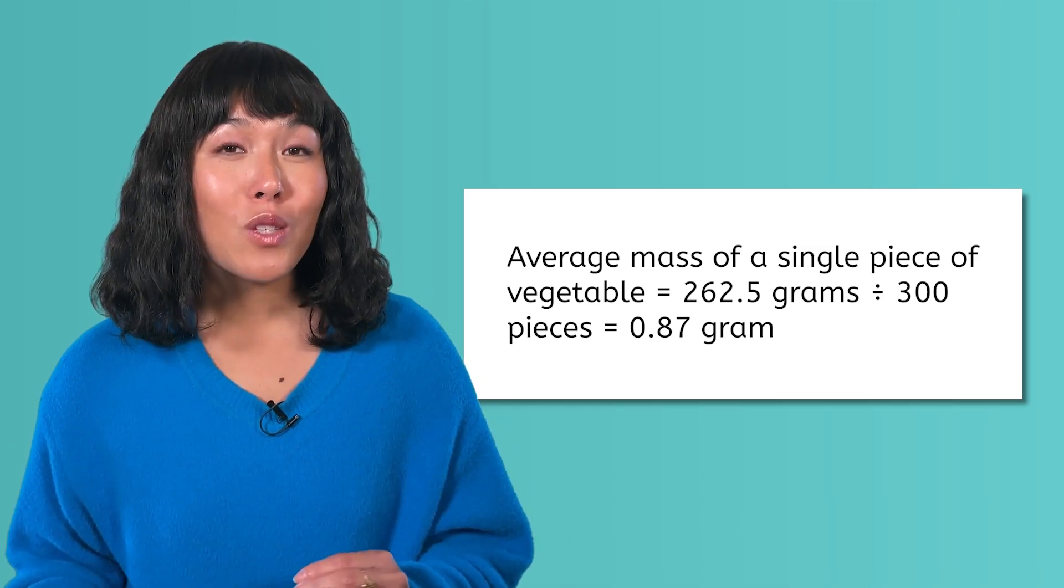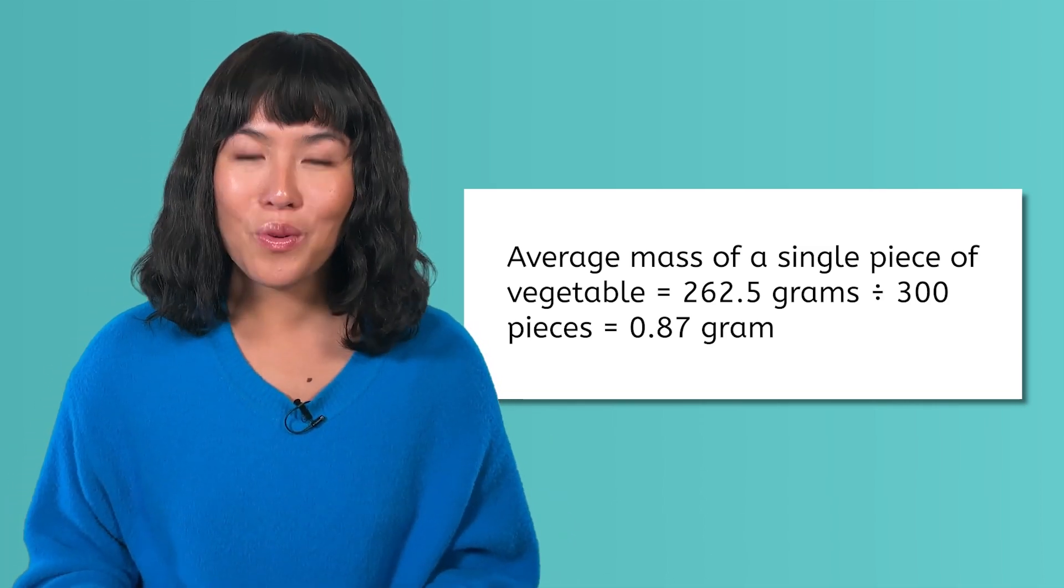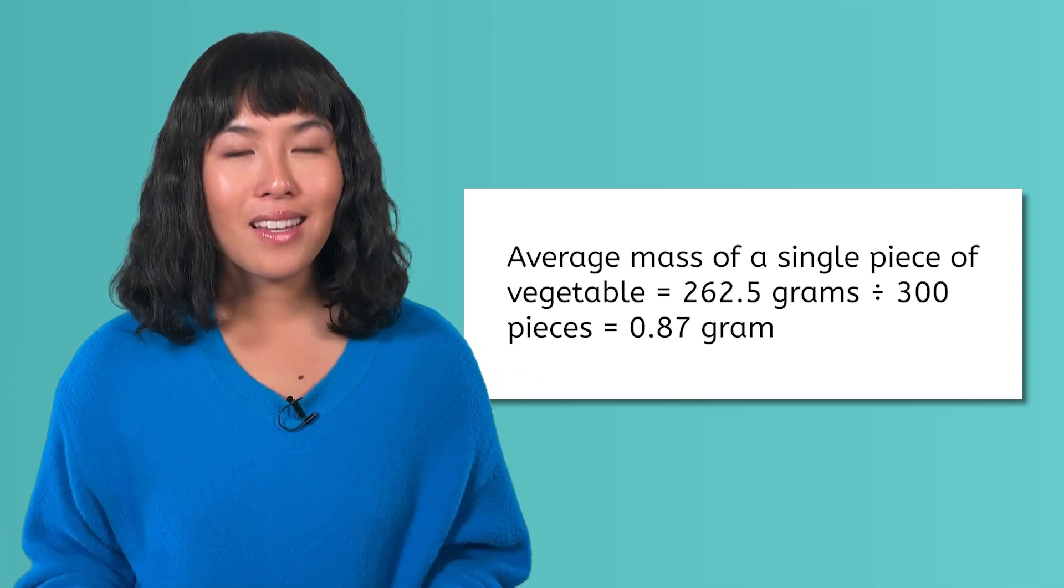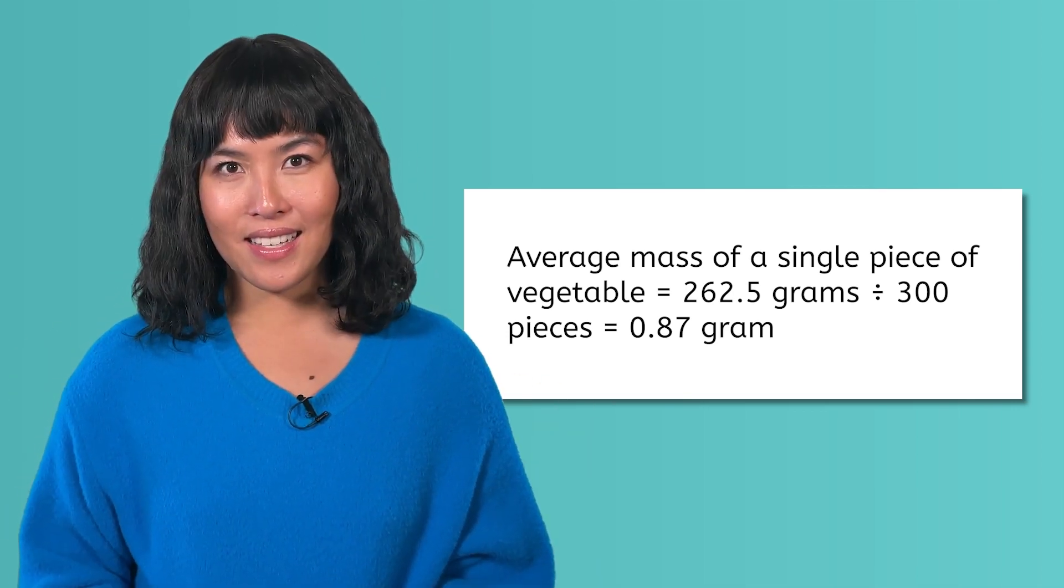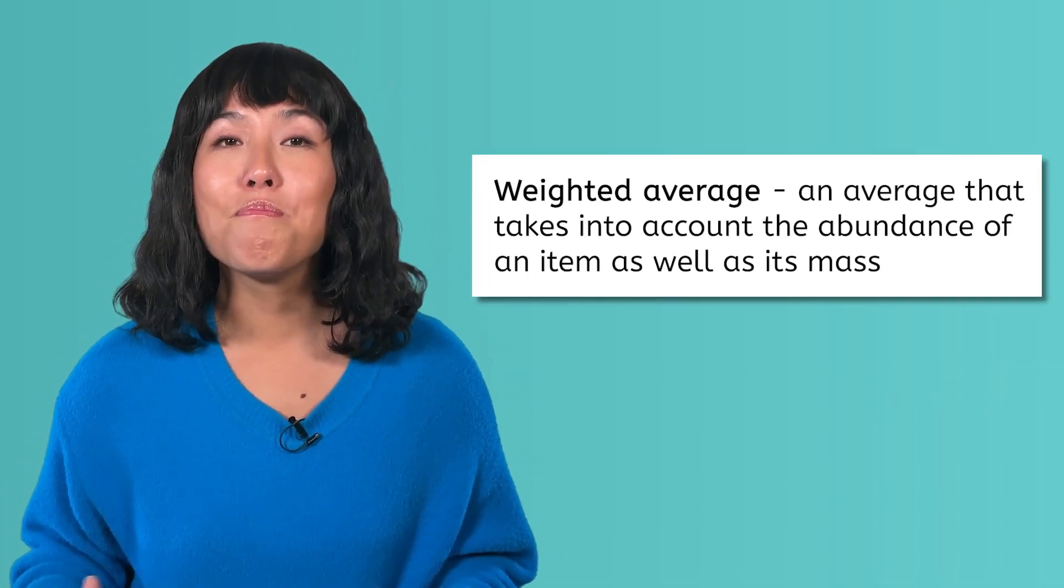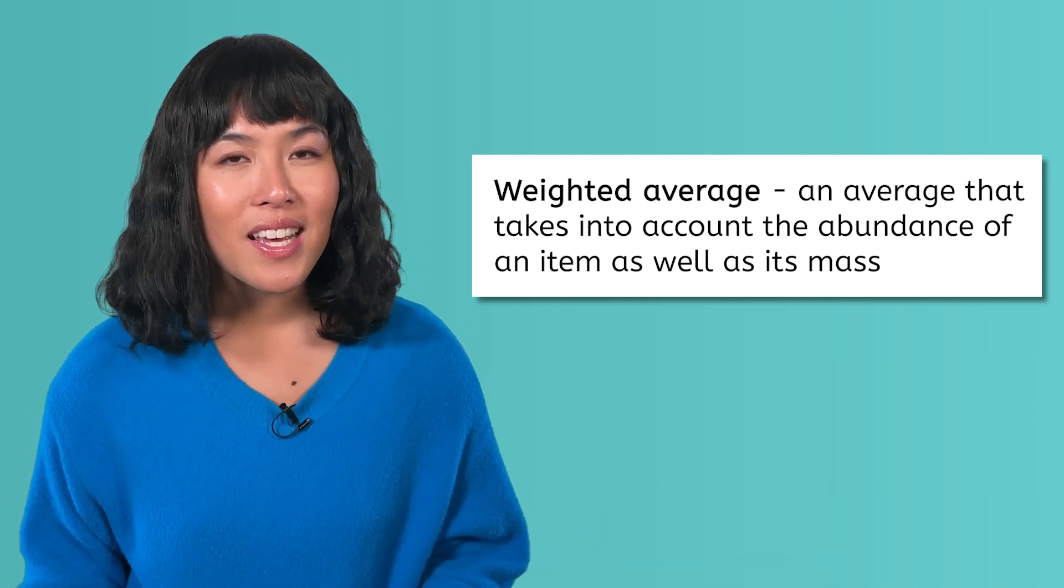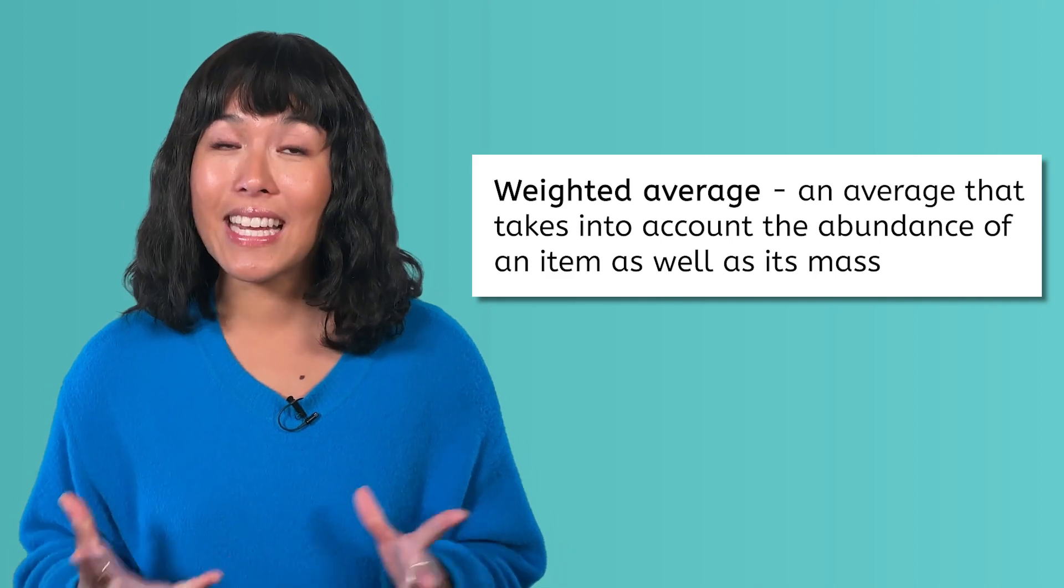The average mass was higher because there were a lot more carrots, which have a higher mass than the corn and the peas. This skewed the mass toward the mass of the carrots. This type of average, where the abundance of a variation of an item is taken into account, is called the weighted average.